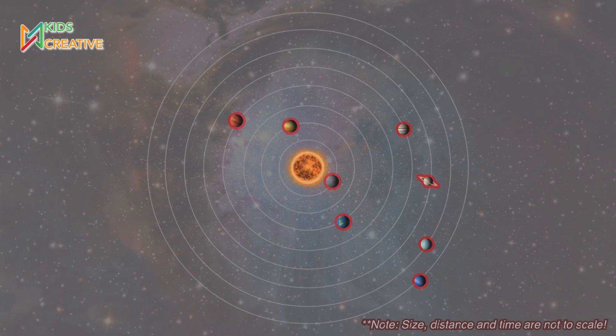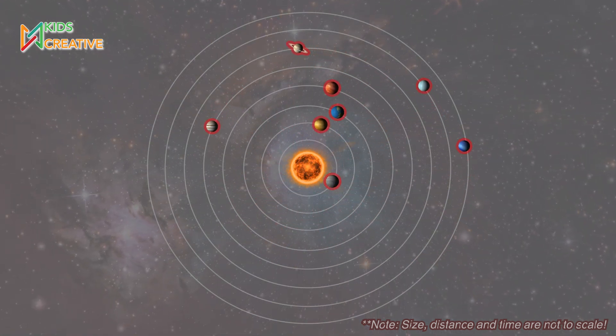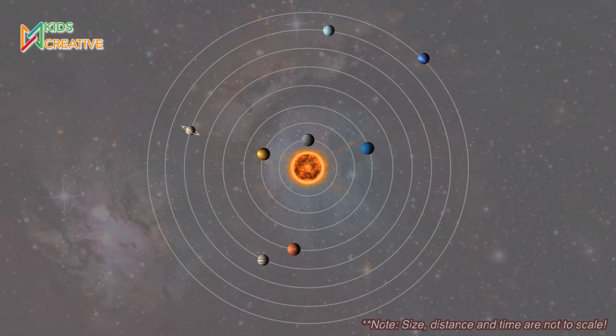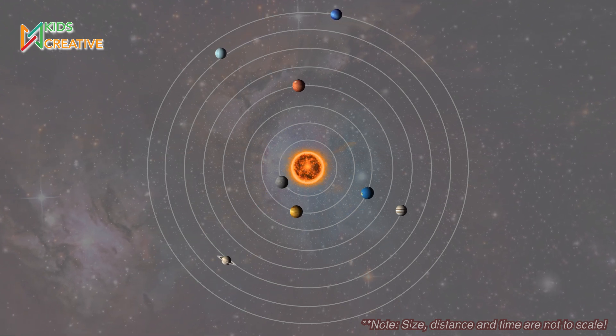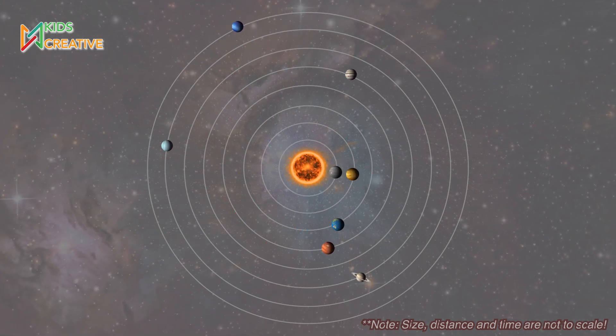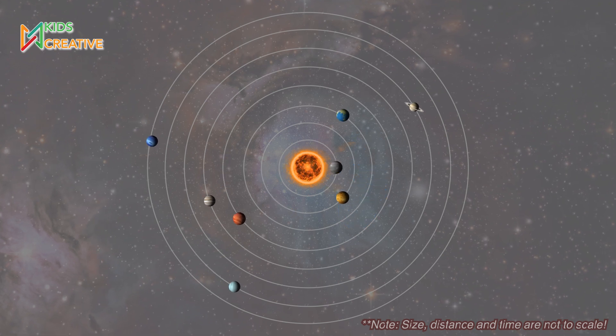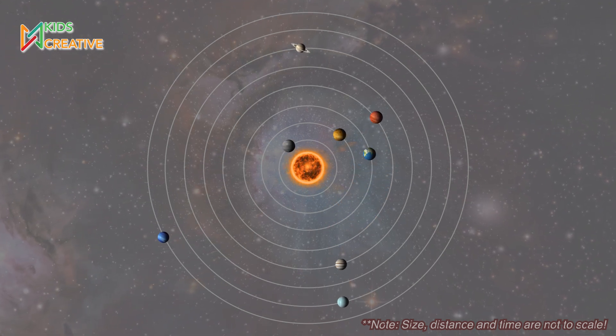Planets are big, round objects that travel around a star, like our sun. Did you know we live on a planet? That's right! Earth is a planet, and it's part of the solar system. Our solar system has eight planets.